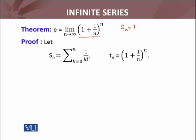The number e is also defined as the limit of the sequence whose nth term is (1 + 1/n)^n. Recall that I have defined the number e by the infinite series: summation from n equals 0 to infinity of 1 over n factorial. This is the number e.